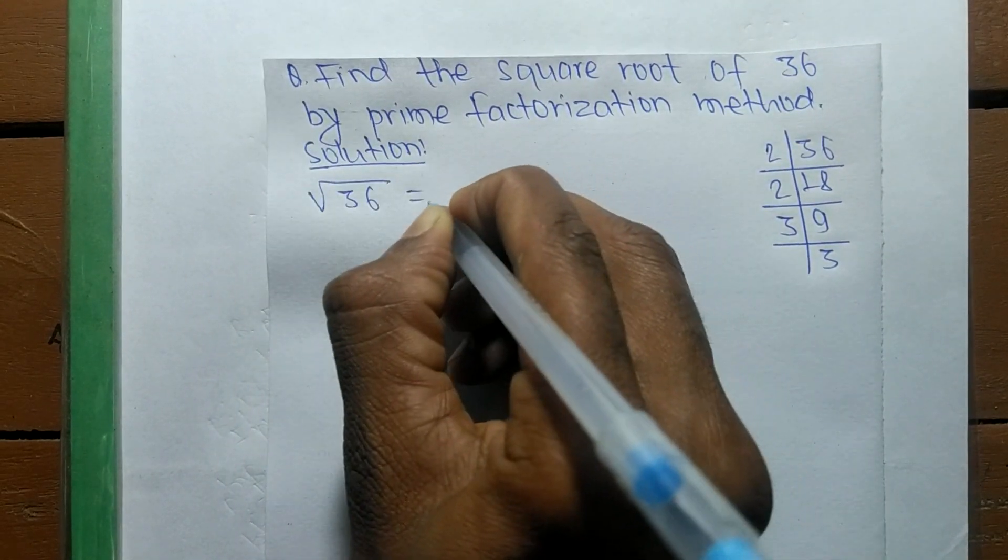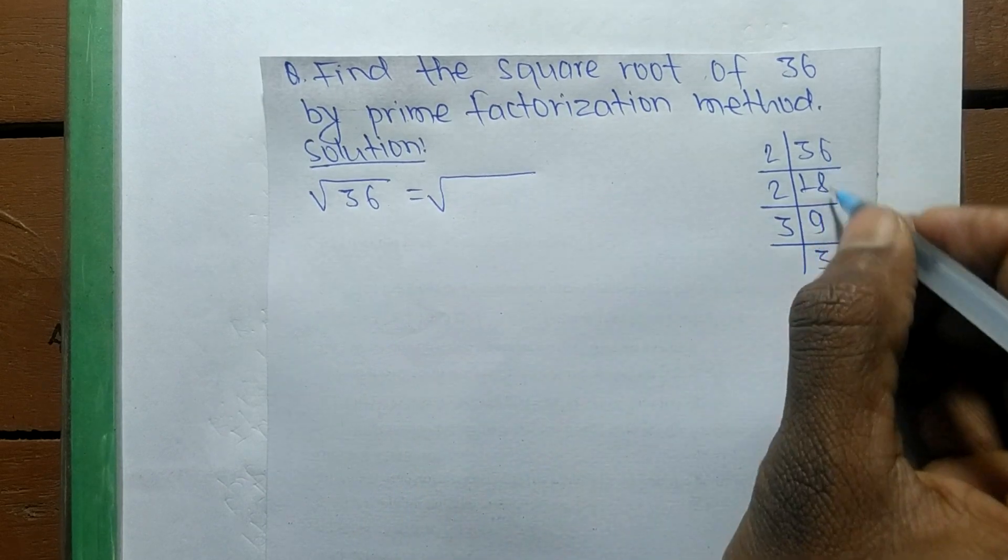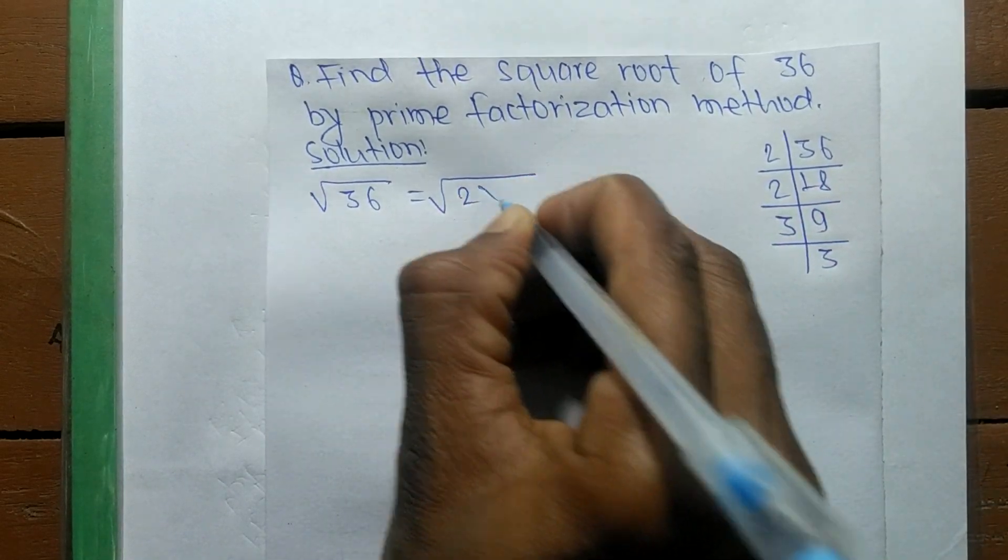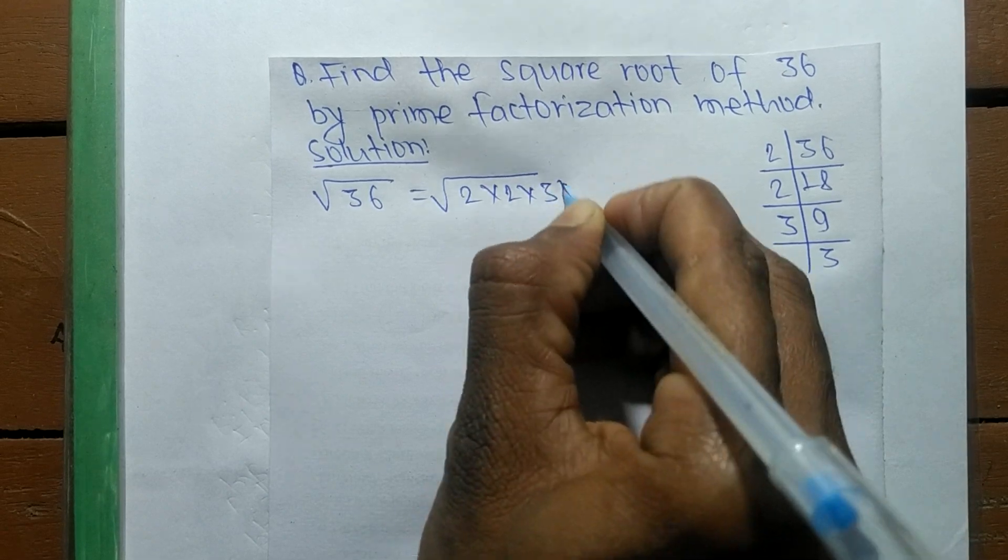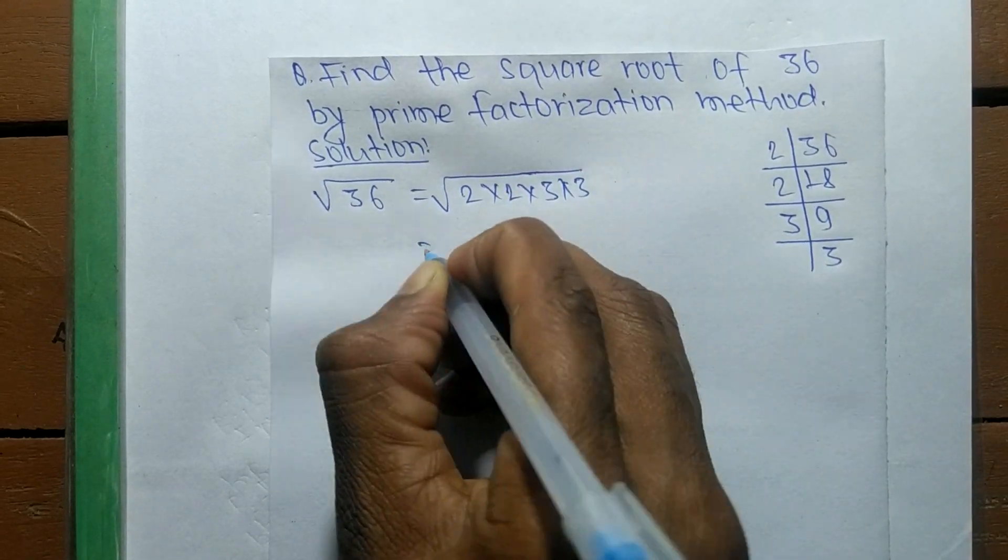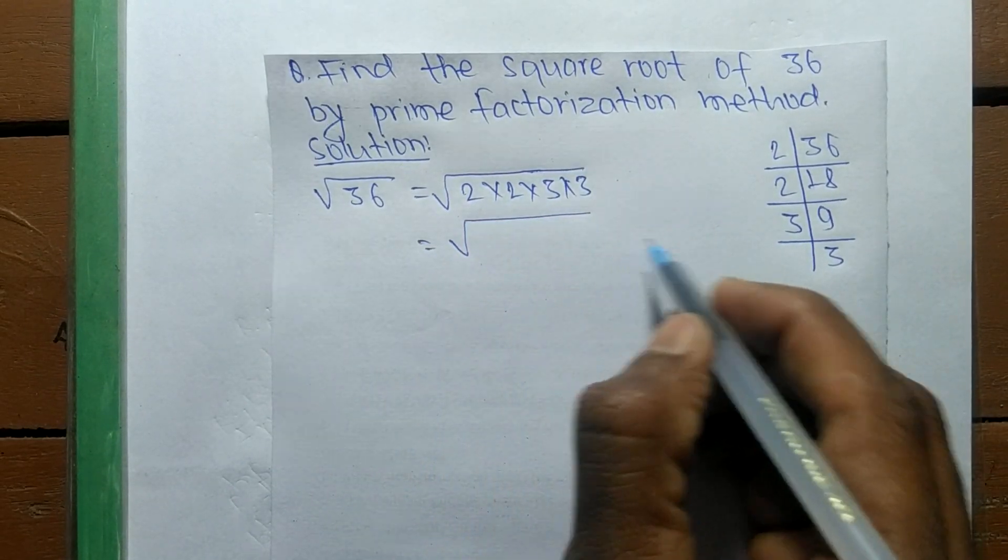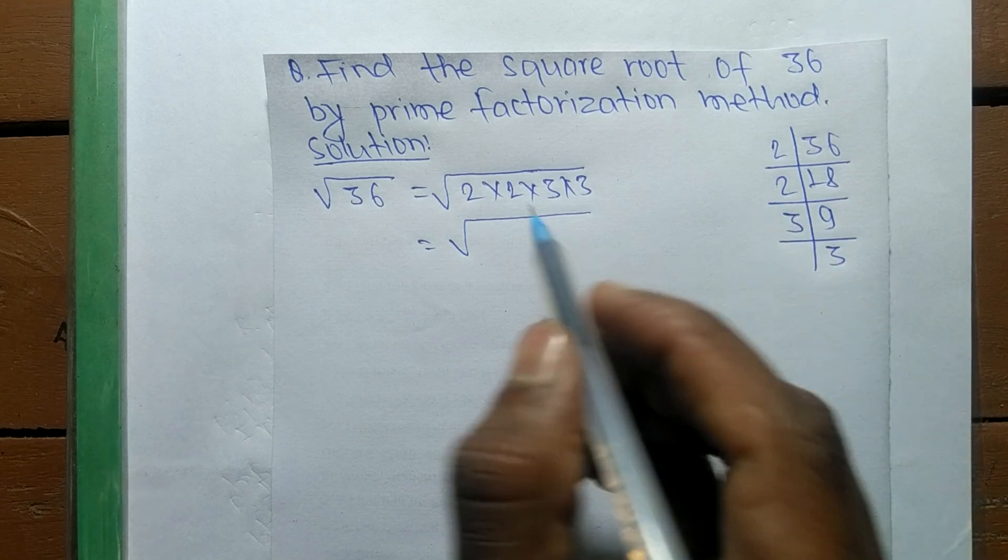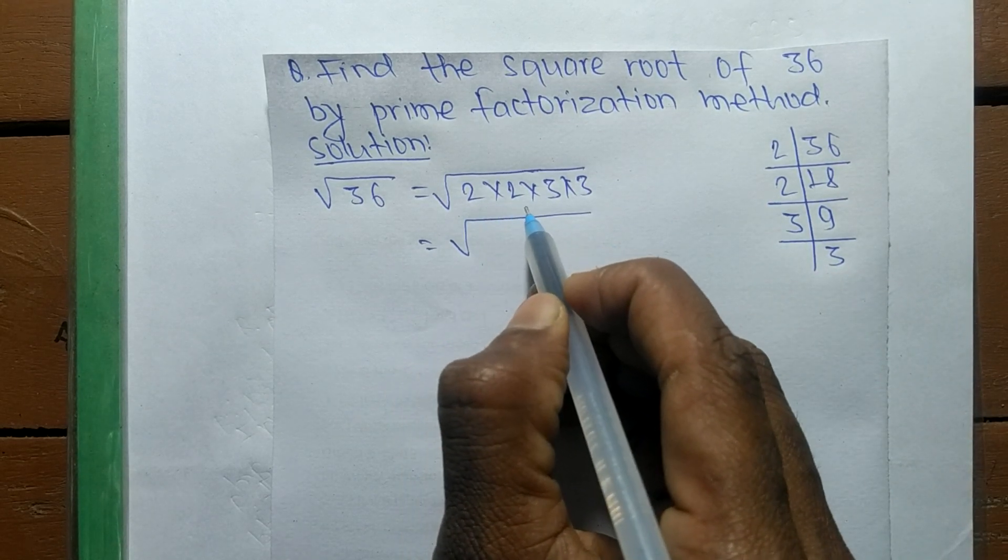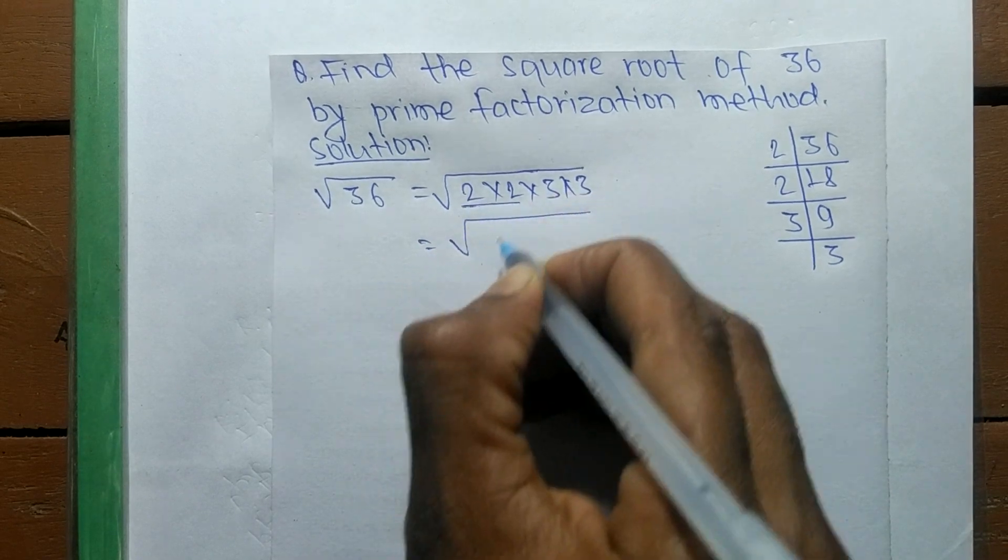So it is equal to, from these prime factors, we can write 2 into 2 and 3 into 3. After writing all the prime factors, now we make the square of all these prime factors.